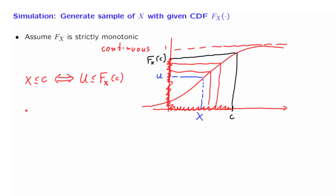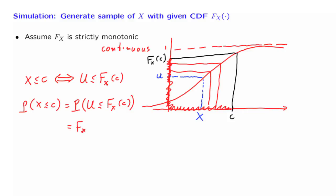We now need to verify that the x's generated this way have the correct CDF. The probability that x ≤ c equals the probability that u ≤ F_x(c). But u is a uniform random variable, so the probability of being less than some value is just that value. So we have verified that with this way of constructing samples of x based on samples of u, the random variable that we get has the desired CDF.